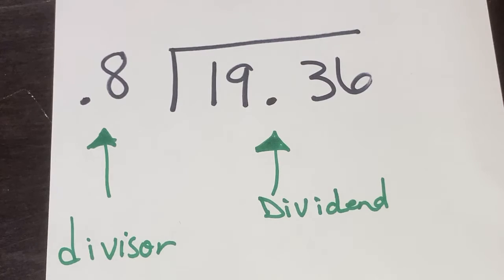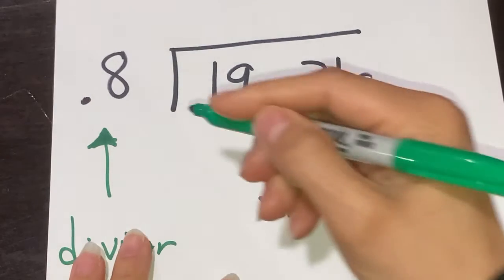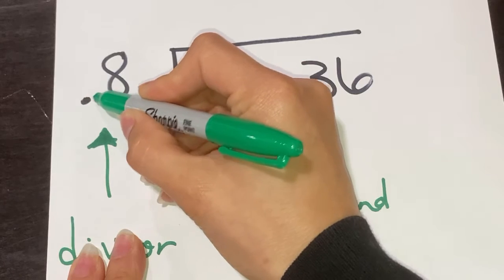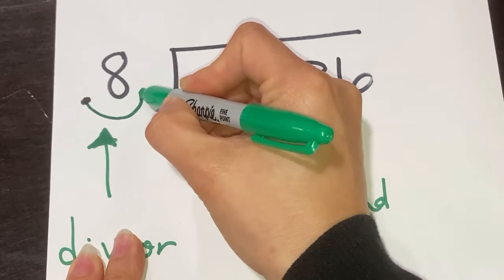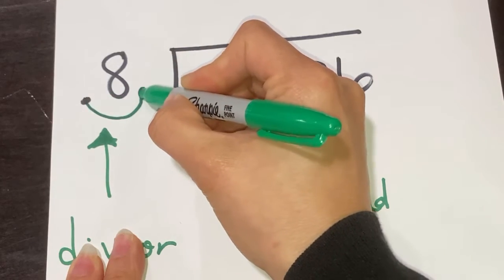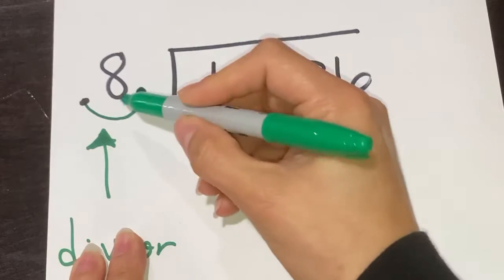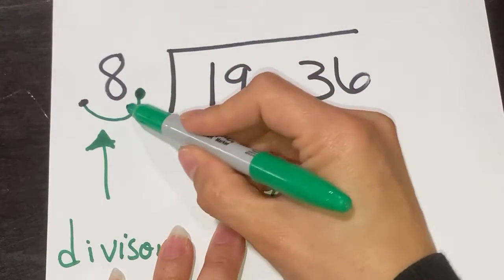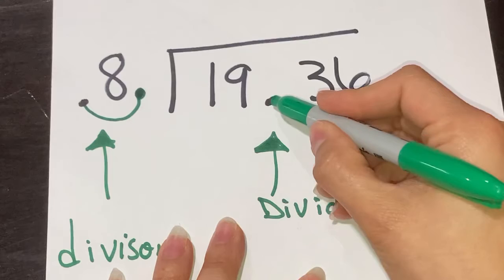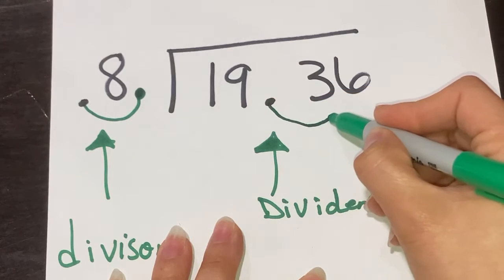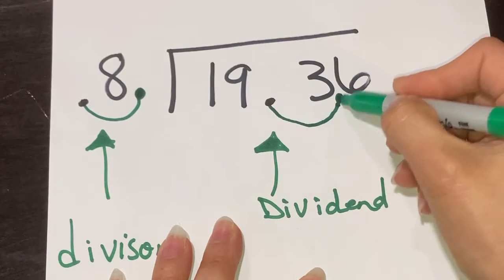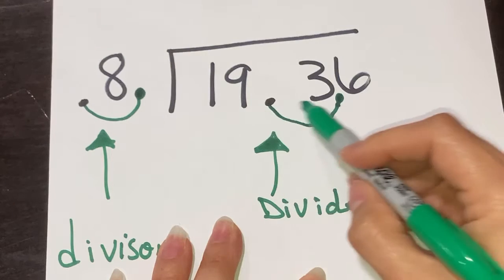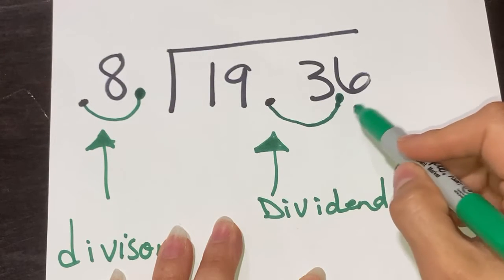What we're going to do, just to make it a little easier, is move the decimal in 0.8 over so it becomes just 8. And if I move it once in the divisor, I also have to move it once in my dividend, so it should now read 193.6.